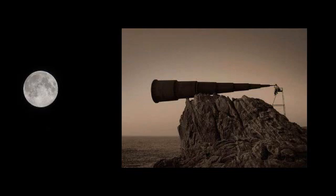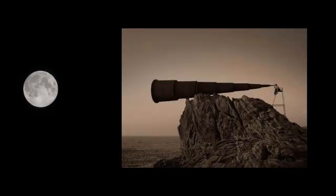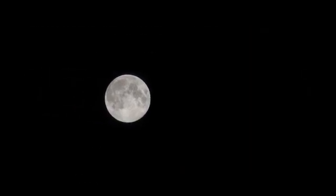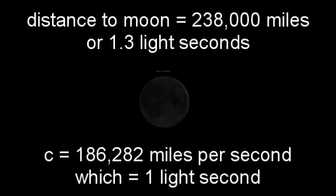One helpful way to understand c is with a thought experiment. Imagine a very large mirror on the Moon, angled to face towards us, and you have a large telescope pointing at the Moon so you can just make out this extremely large mirror. You flash a very bright light while looking through the telescope. You will see the reflection of that flash 2.6 seconds later — 1.3 seconds for the light to travel to the Moon and another 1.3 seconds to come back. The Moon is about 238,000 miles away, which is 1.3 times 186,000 miles — one light second.